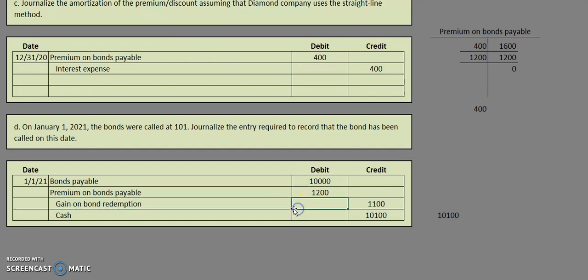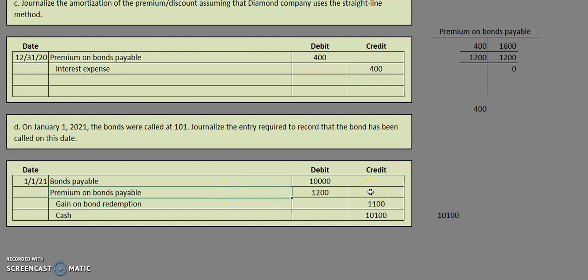Keep in mind that your gain or loss should always be your last step, because you need to first take care of the cash you're paying, retire the bond, and remove its related premium or discount. If the plug ends up being a debit, it is a loss; if it's a credit, it is a gain. I work from the outside in on this journal entry — debits from the top, credits from the bottom — until I find the gain or loss.